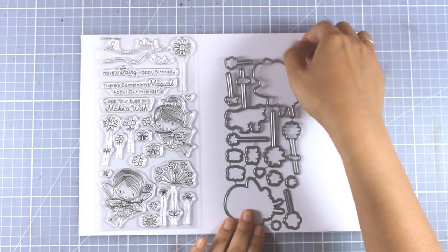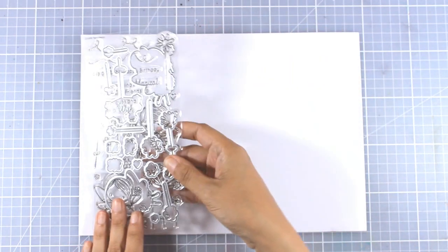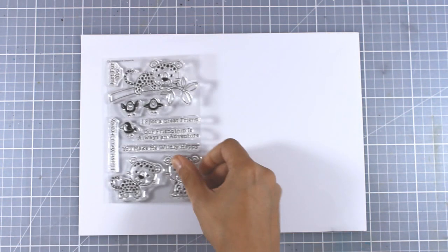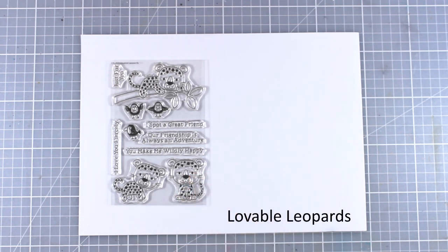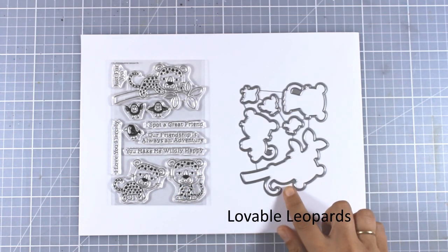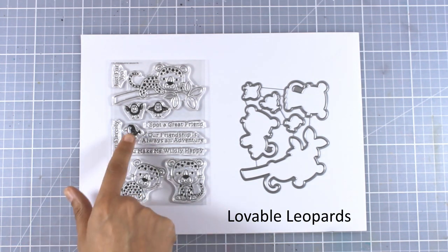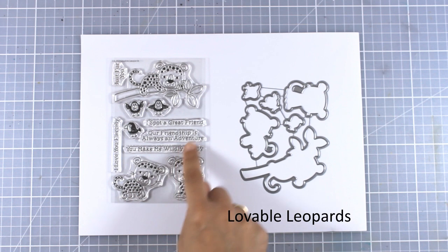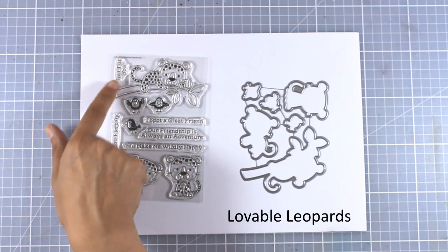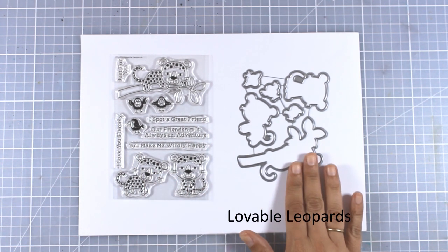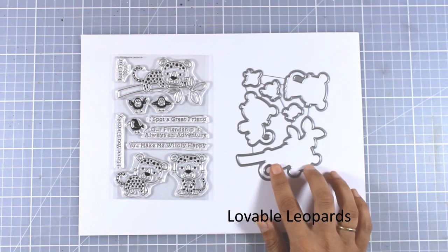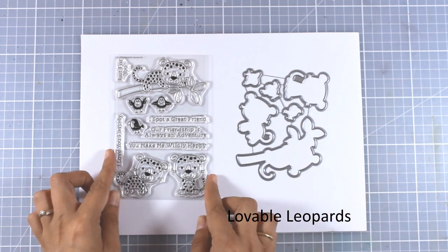Now let's move on to the 4x6 stamp sets from this release. There are actually three, and let's start with this adorable one with the leopards, called Lovable Leopards, and certainly they are. It comes with three different designs, three little birdies, and sentiments such as I spot a great friend and our friendship is always an adventure. They're really great for friendship cards, and there are also matching dies.